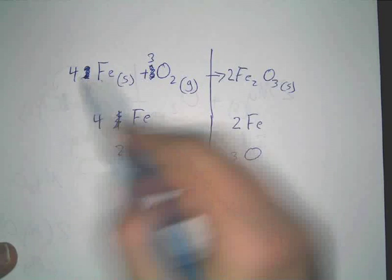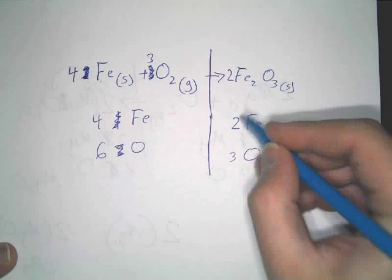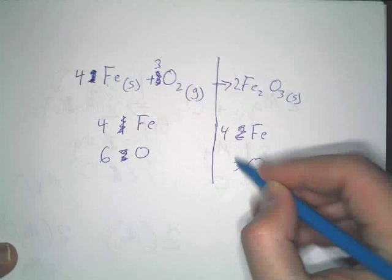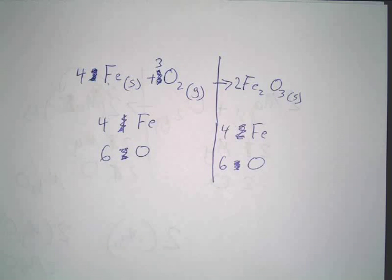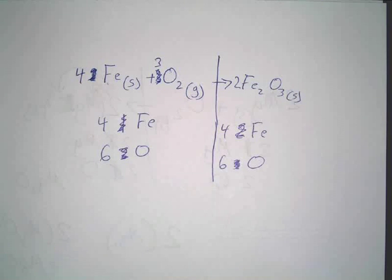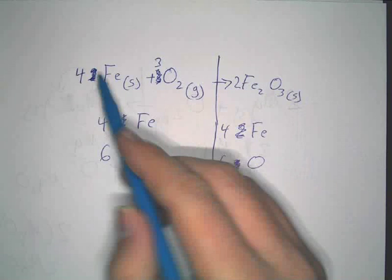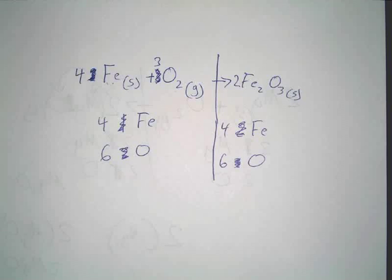So, now, let's look at this. Four irons. What's that change our oxygens to? Six. Then what do we got over here? Four. Six. Alright, now, let's explain all this.